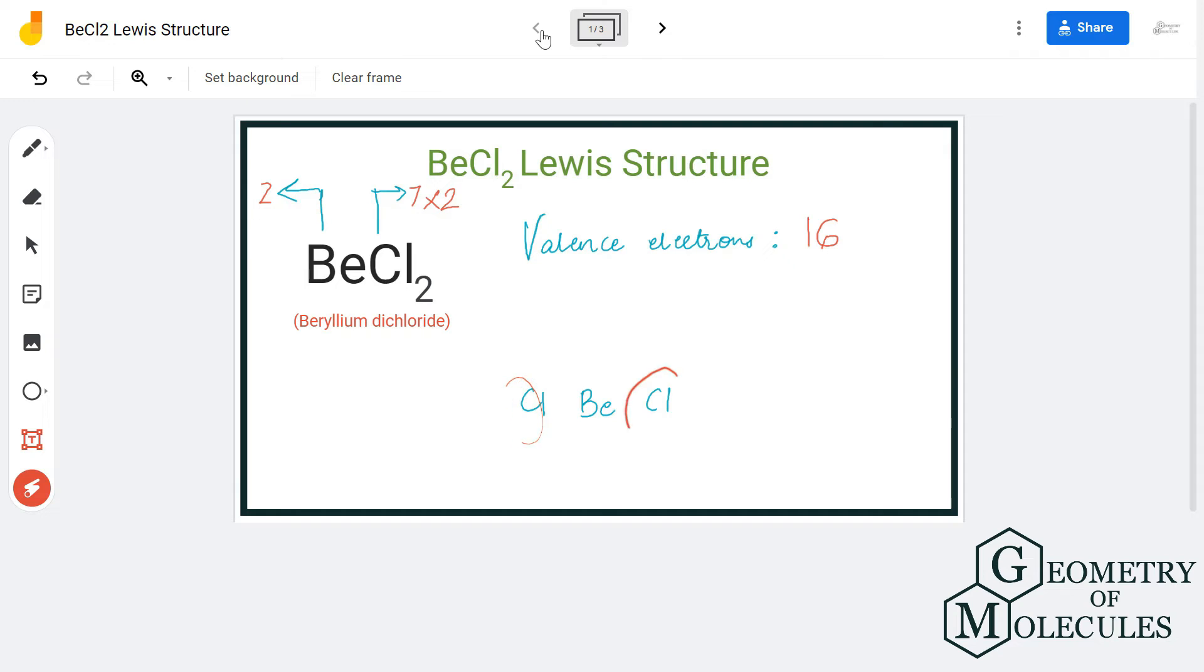If you look at the chlorine atom, it only requires one valence electron to complete its octet, that means to have eight valence electrons in its outer shell, which it will share from beryllium atoms. So both these chlorine atoms will share one valence electron each of beryllium atom and form a single bond.